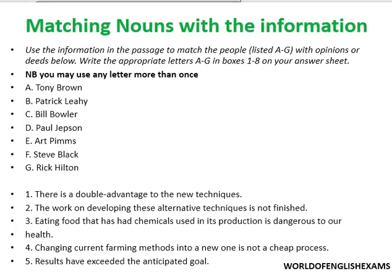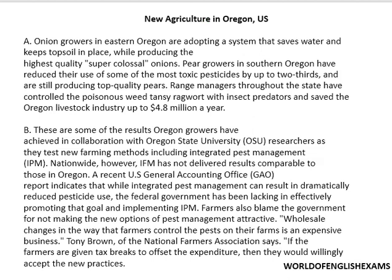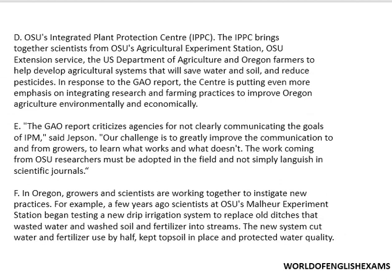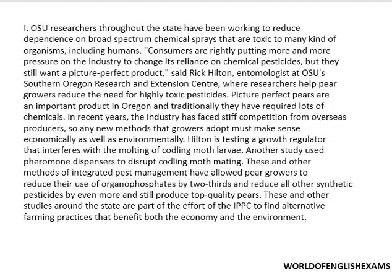By the end of the question type, if you are unable to see that any option has been repeated, it means you have made a mistake — so NB is an opportunity to correct yourself. Here you can see names like Tony Brown, Patrick Leahy, Bill Bowler, Paul Jepson, Art Pimps, Steve Black, and Rick Hilton. You have to read the given statements and identify the person who is associated with the information, by reading the passage titled 'New Agriculture in Oregon, US.' The passage is divided into sections to make it easier for you to read and solve.